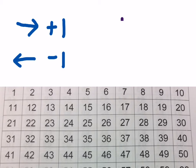And what if I go down? What's really happening if I go down? Like, say, from 12 to 22, what's happening there? And what's happening if I go up, like from 39 to 29? Well, going down is like adding 10, and going up is like subtracting 10.